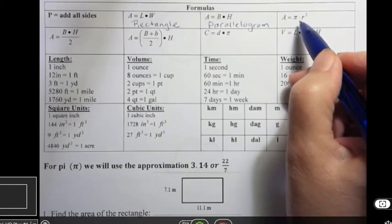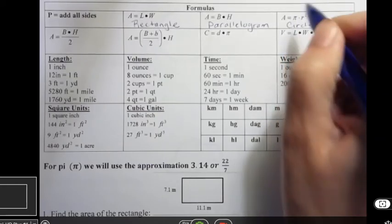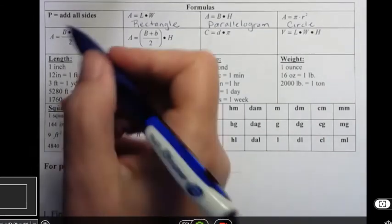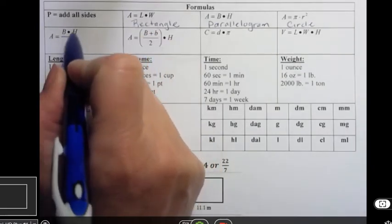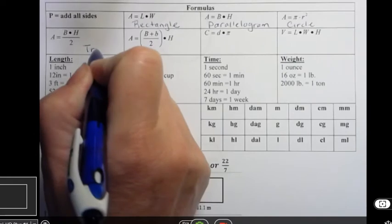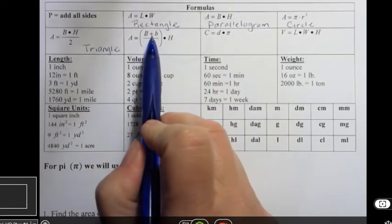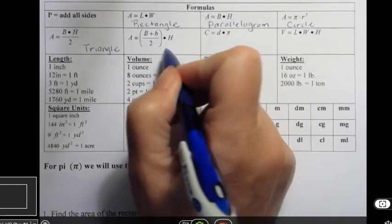Area equals pi r squared is for a circle. For our purposes, for pi we'll either use 3.14 or 22 sevenths depending on what we're asked to use. And base times height divided by 2 is a triangle.